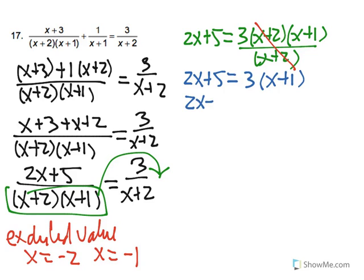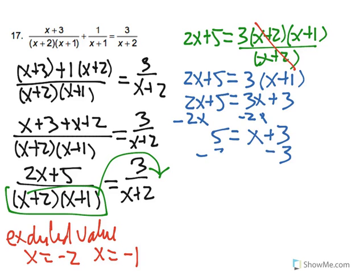And using distributive, we have 3x plus 3. So subtract 2x from both sides. So then 2 equal to x.